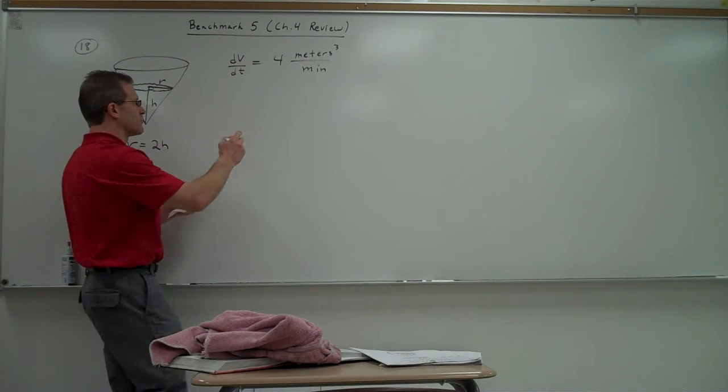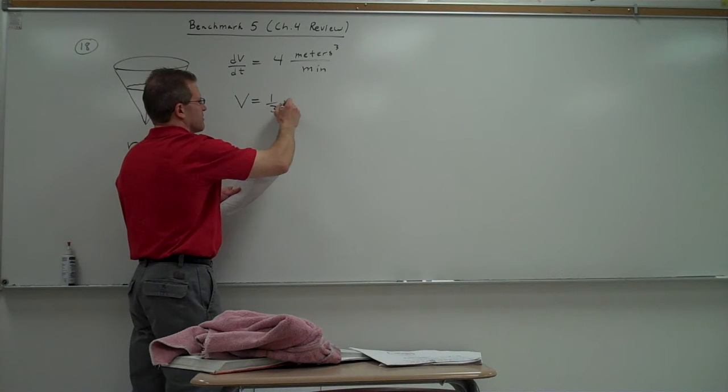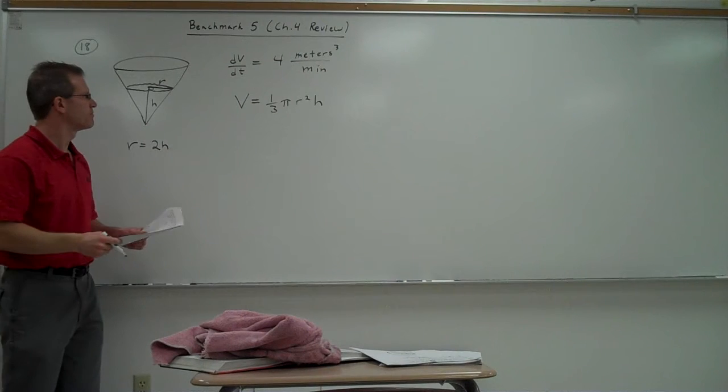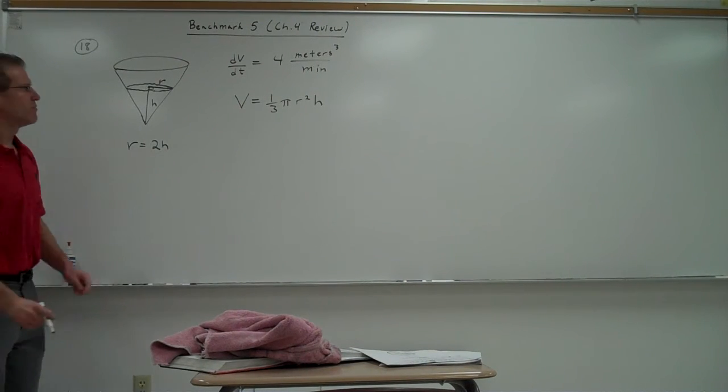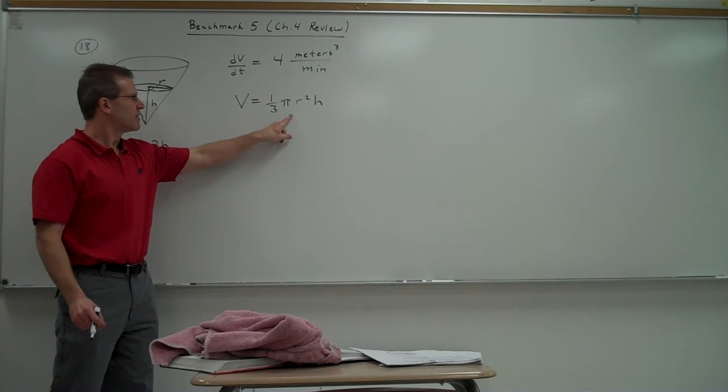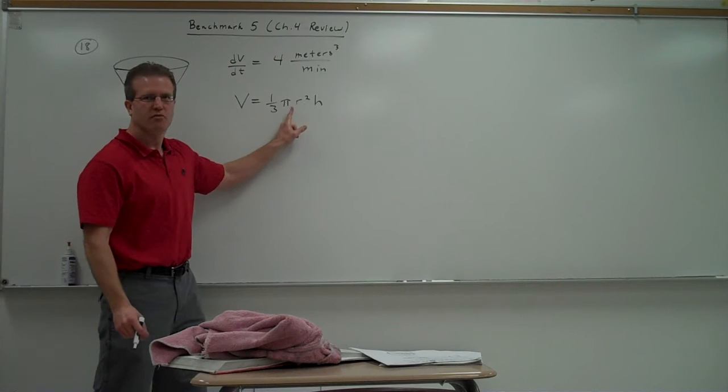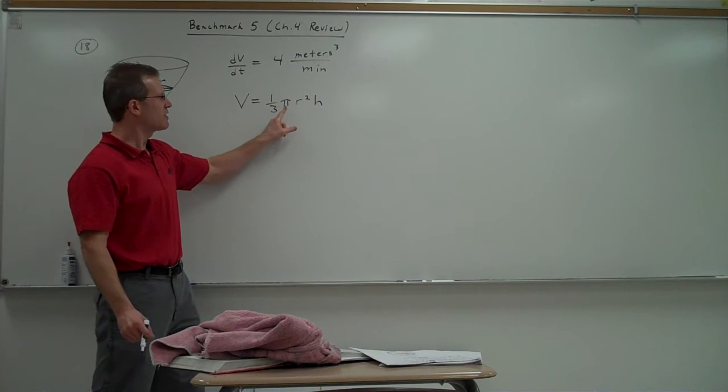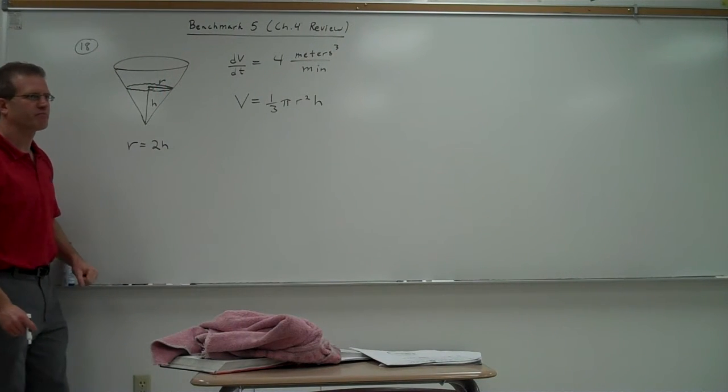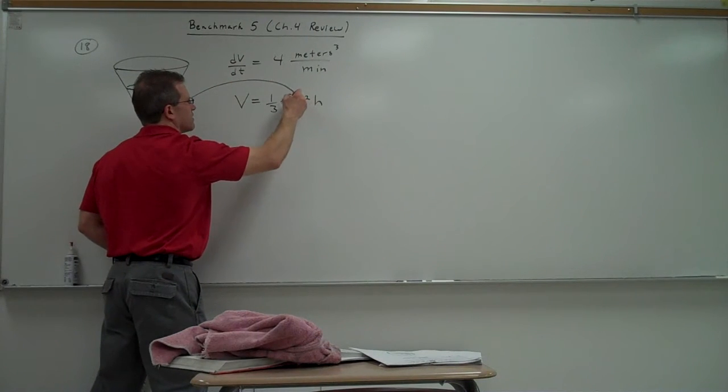It tells us that our volume formula for a cone is 1 third pi r squared times h. Alright. First step. We want to take the derivative of both sides to find dh dt. But we have a problem because we have a variable on the left and two variables on the right. We don't want two variables on the right. How can I get the right side to only have one variable instead of two? Plug in 2h for r. Right. Plug in 2h for r.